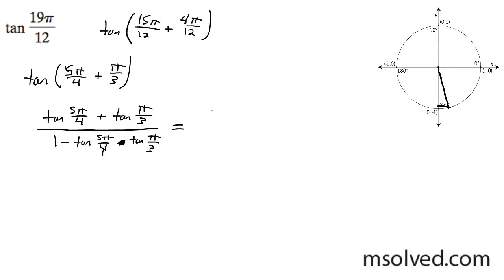So finding the solutions to all these we get 1 plus root 3 all over 1 minus tangent of 5π over 4 times π over 3 root 3. So we end up with 1 plus root 3 over 1 minus root 3.